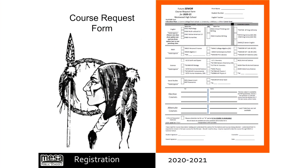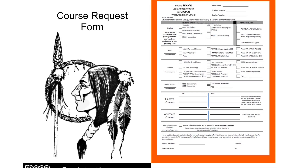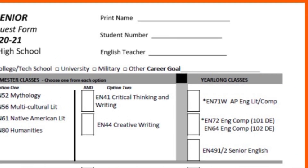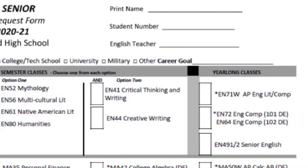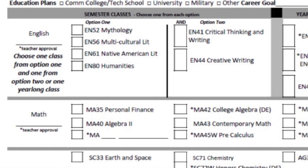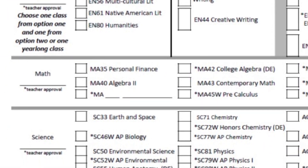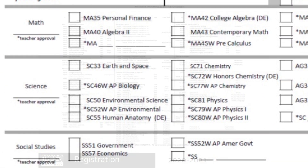To carefully complete all selections of the course request form, begin now by completing your name, student ID, and English teacher. Then select courses for English, math, science, and social studies.